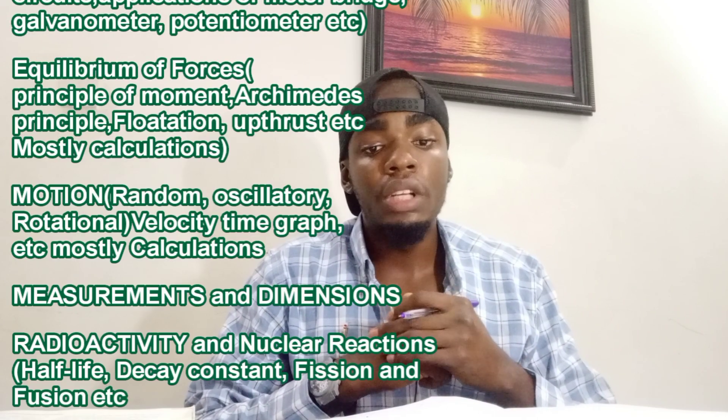The eighth most repeated topic is radioactivity and nuclear reactions. Know the definition of radioactivity — the process by which an unstable atom disintegrates to release energy. Know how to calculate half-life. In exam questions, they typically give you a nuclear equation where an element disintegrates and ask which particle is released — it could be an alpha particle (helium), a beta particle (electron), or gamma radiation. Also know how to get the decay constant, and know the difference between nuclear fusion and fission.